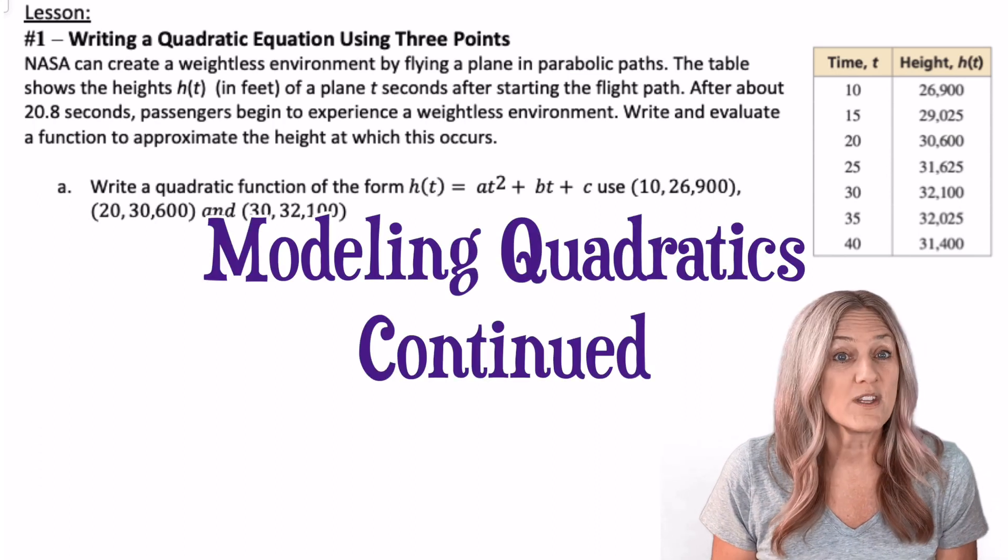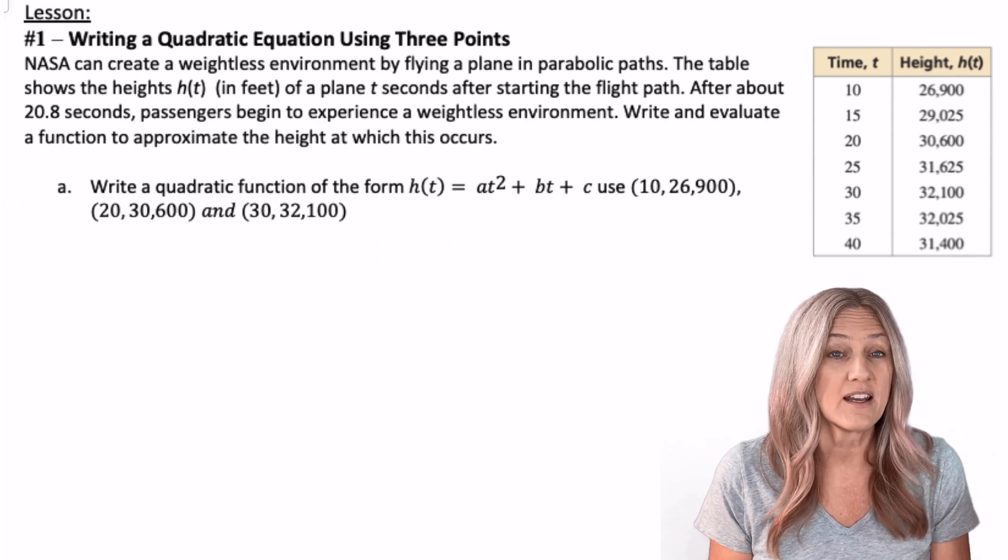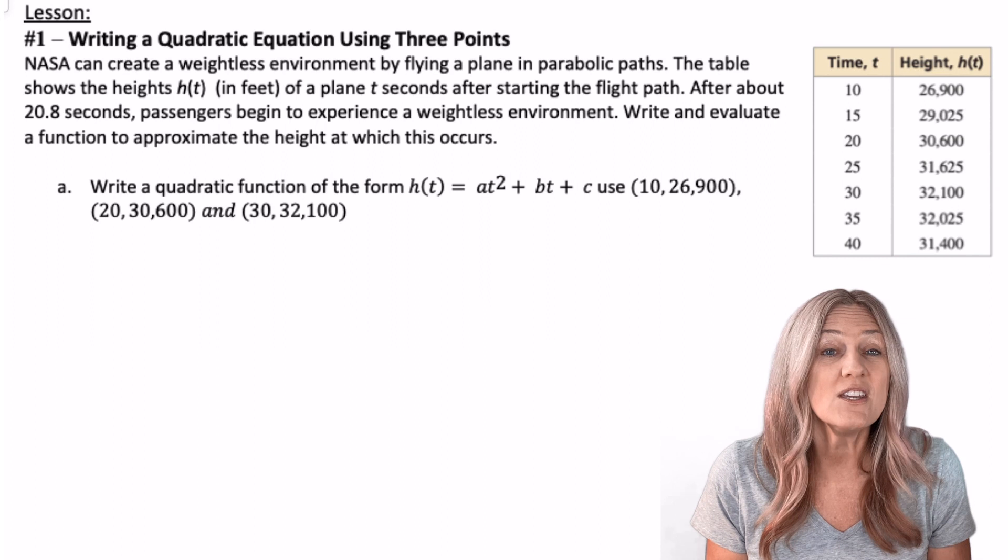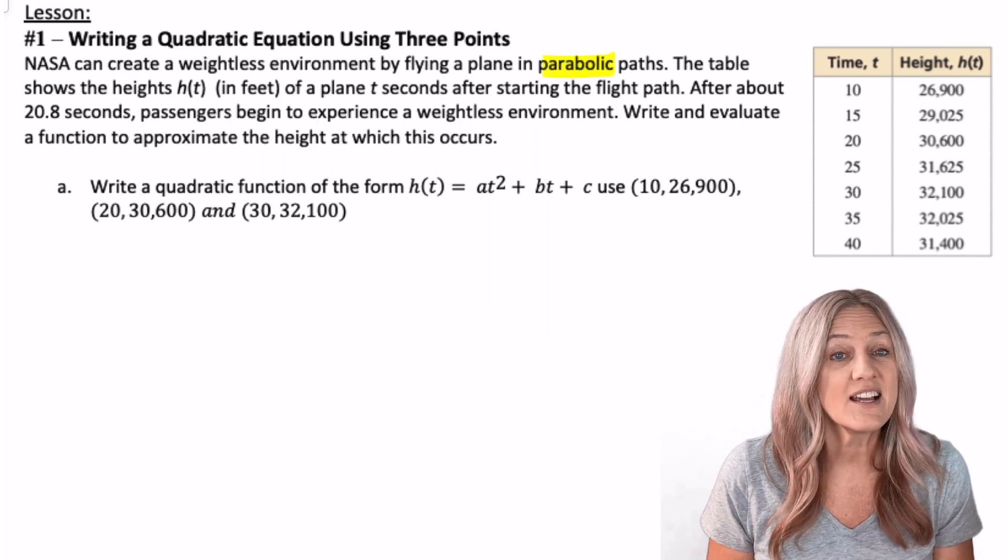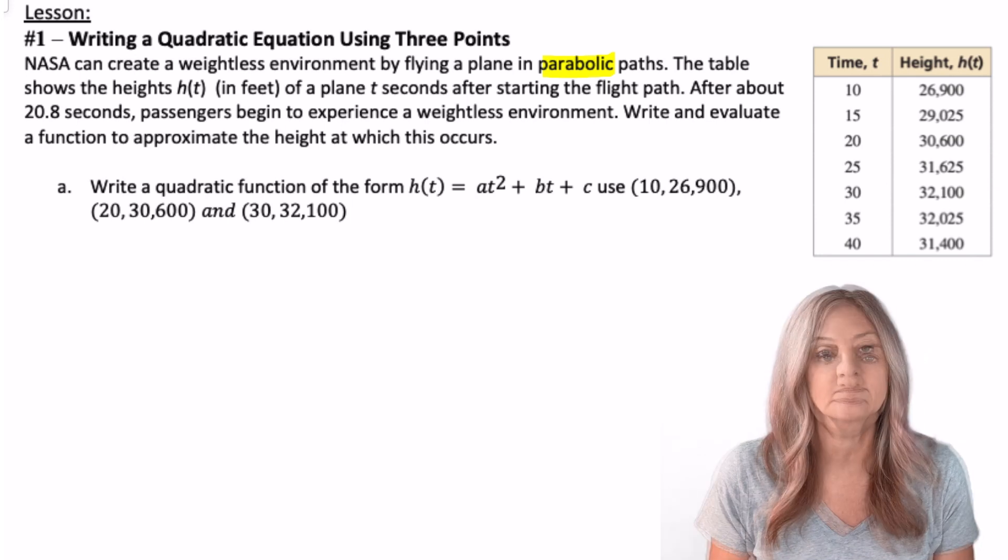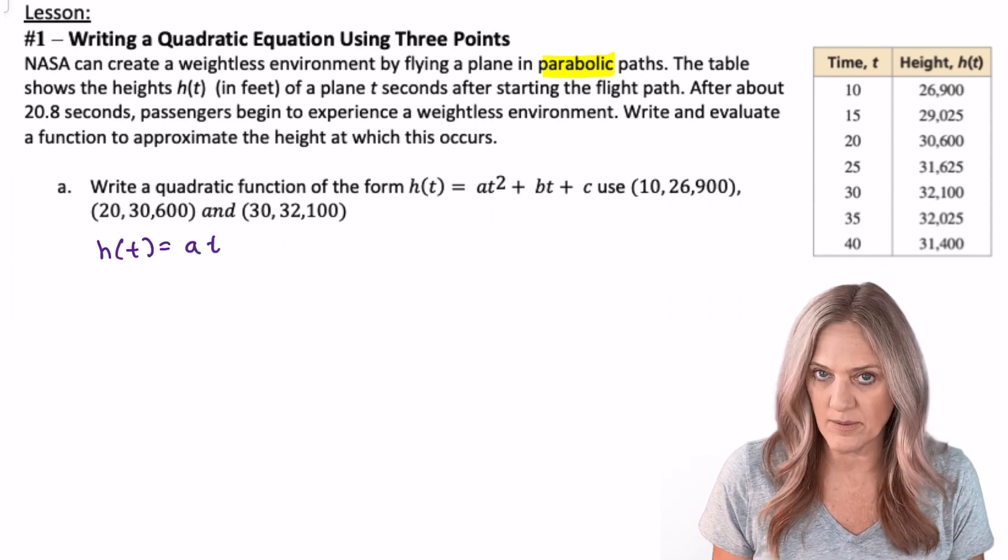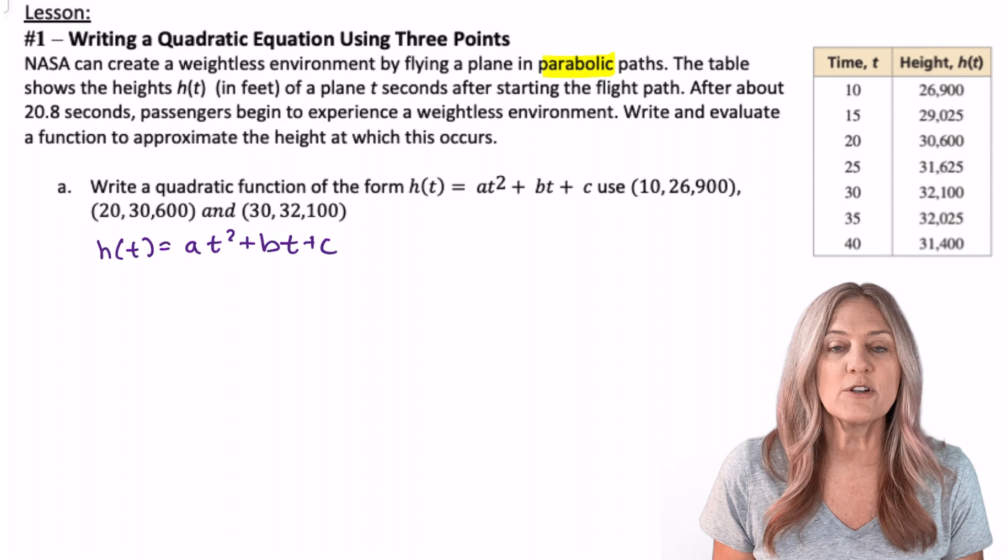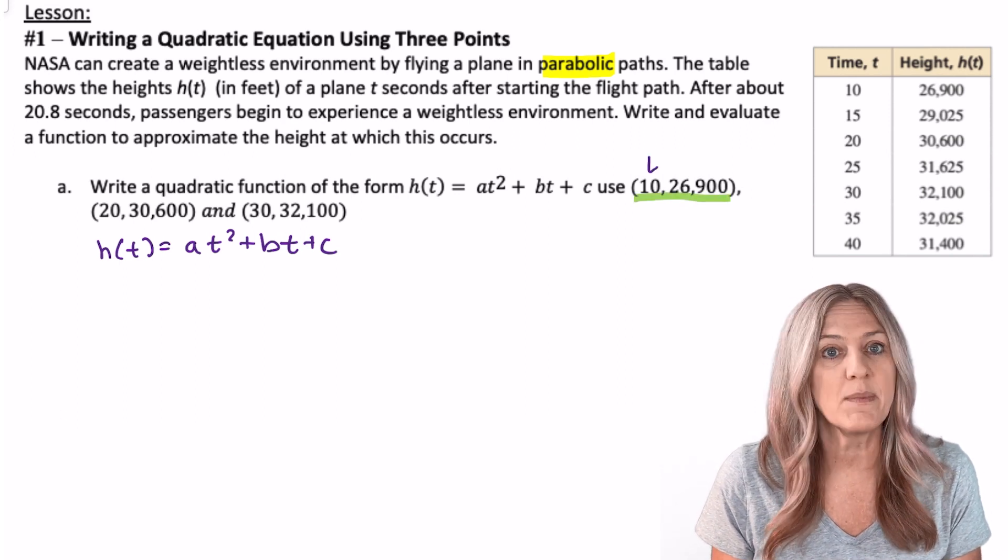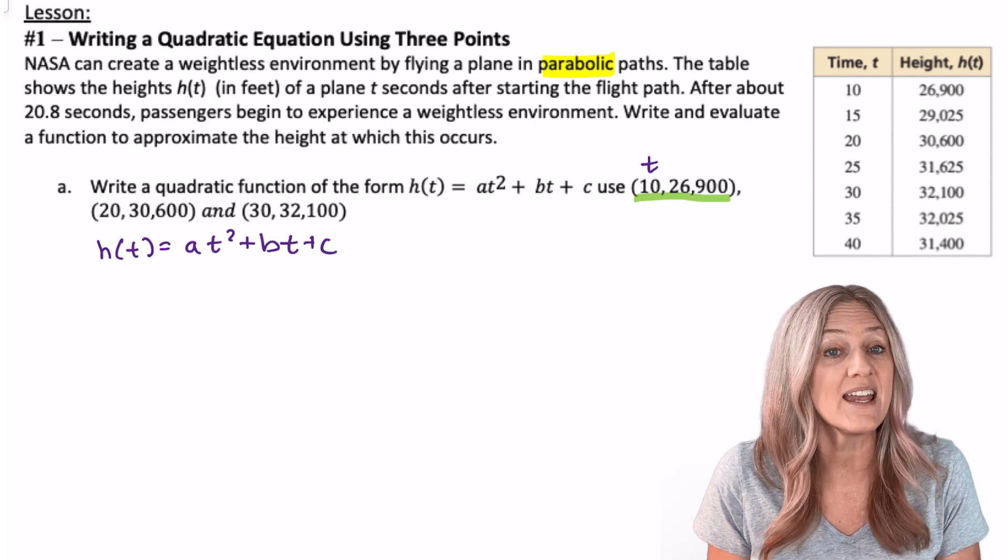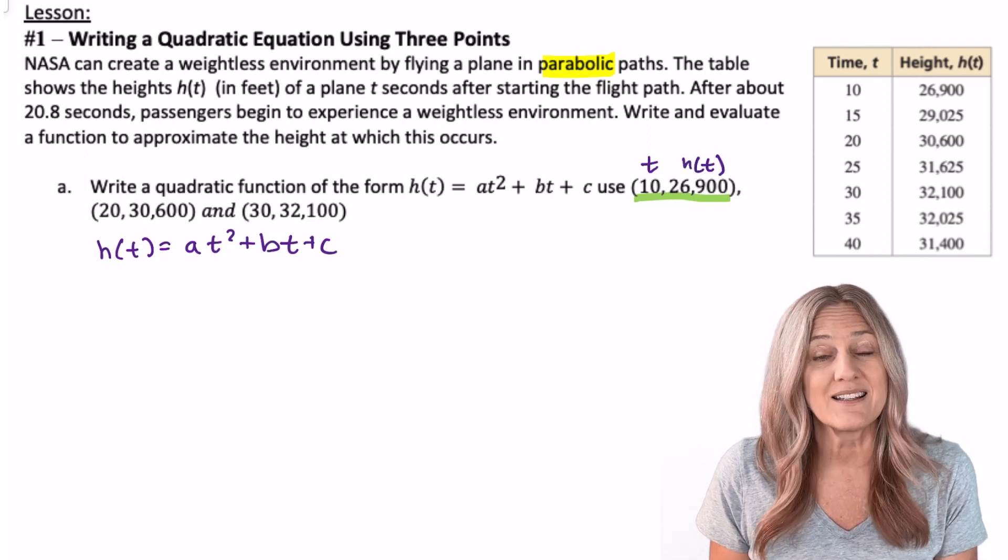Now let's write a quadratic equation using three points. The context of this situation is NASA flies an airplane in parabolic paths to achieve weightlessness. The height h(t) is given in feet and time t is given in seconds. We're going to write a quadratic function in standard form. We're given a variety of data points but we've chosen three to use. The first is (10, 26900). 10 represents time in seconds so we can substitute 10 for t into our function and h(10) is 26,900.